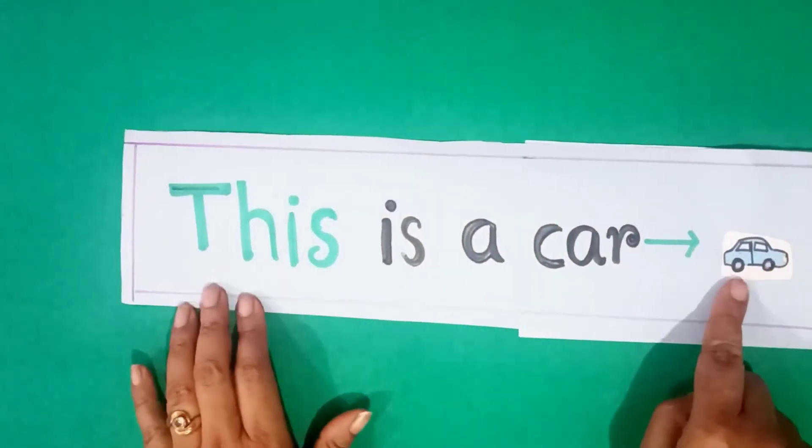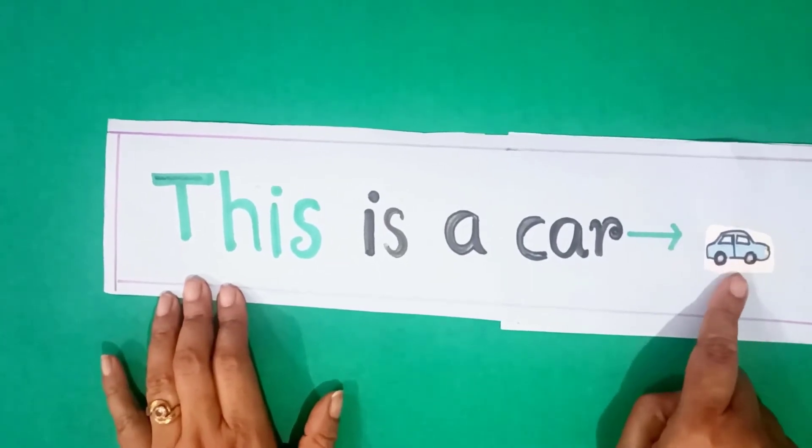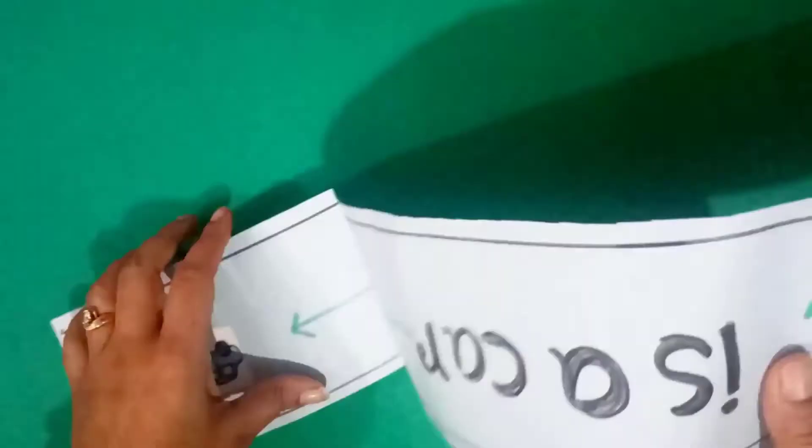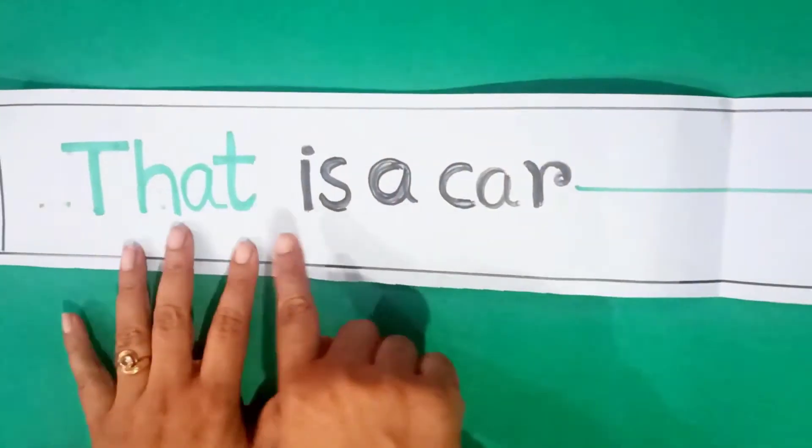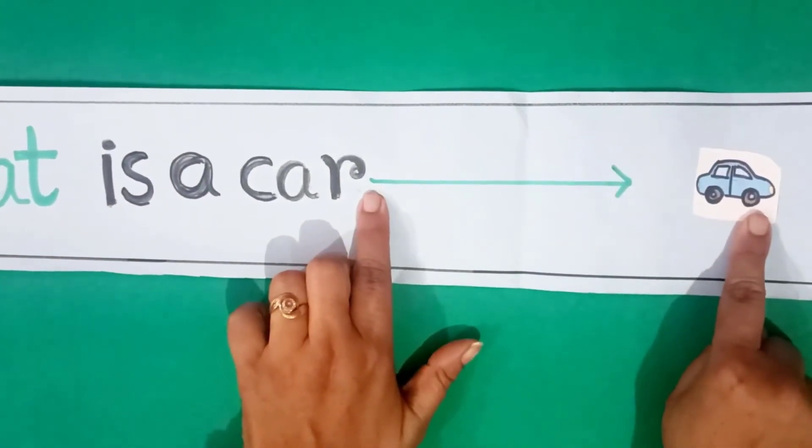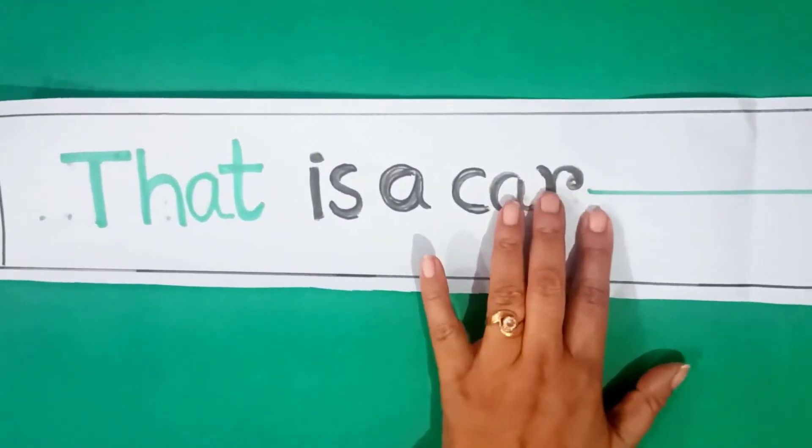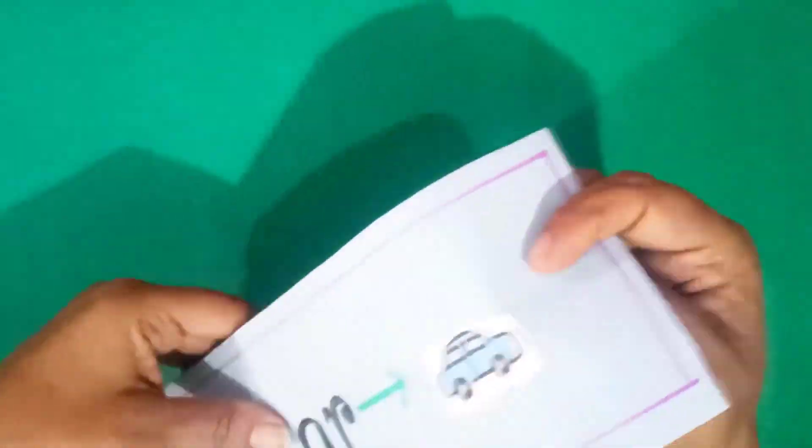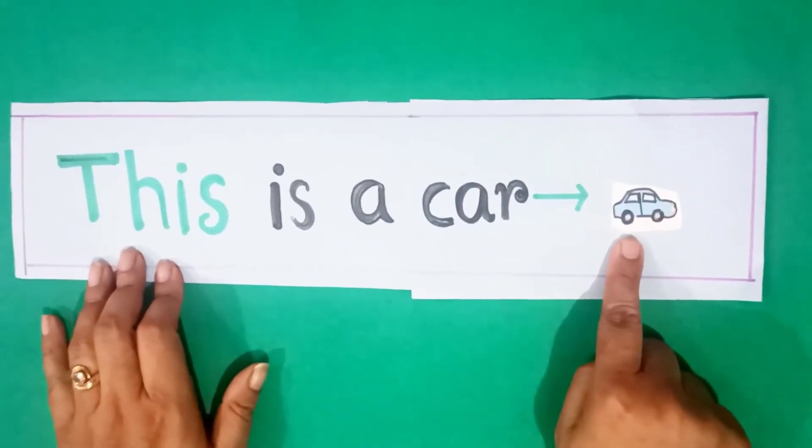Next example, see, this is a car. This is a car. Now, look, that is a car. See, car is far. And here, car is near. Like this.